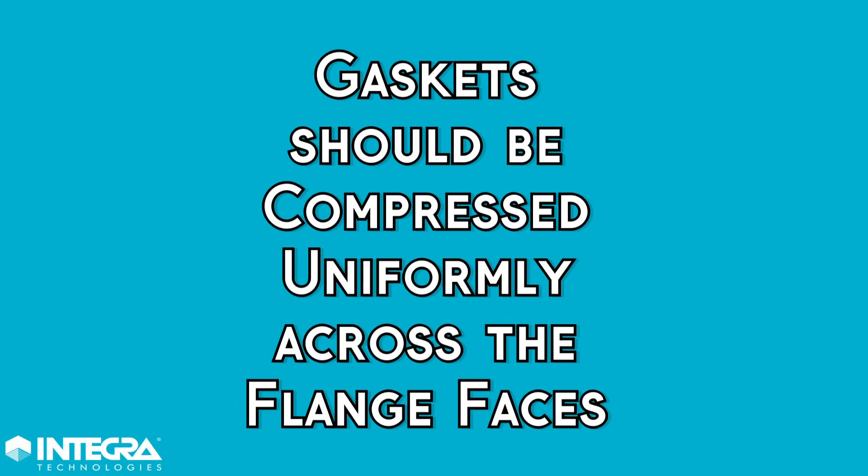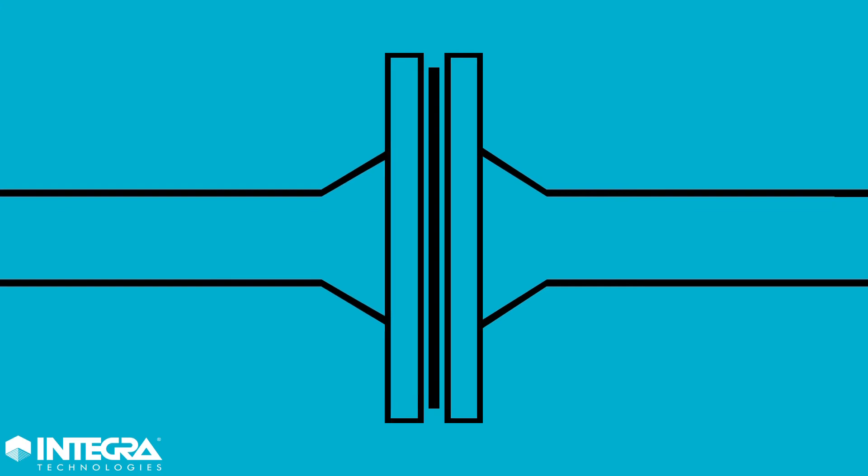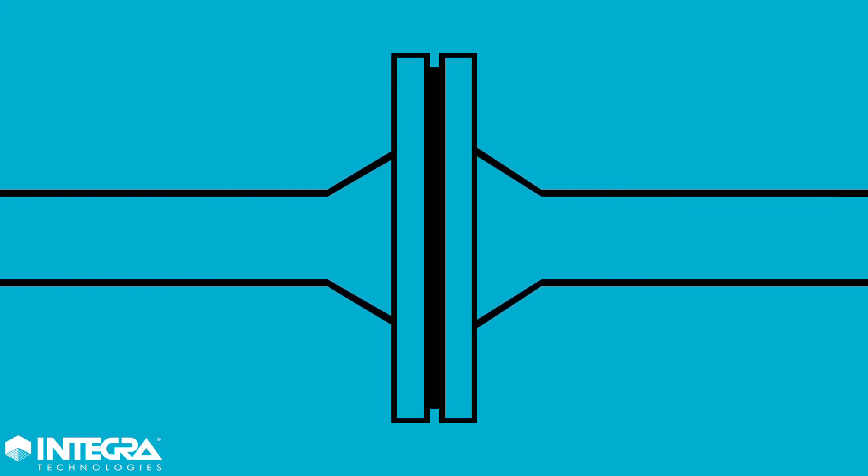Gaskets should be compressed uniformly across the flange faces. An excessive gap is a condition where two flanges are separated by a distance greater than twice the thickness of the gasket when the flanges are at rest, and the flanges will not come together using a reasonable force.